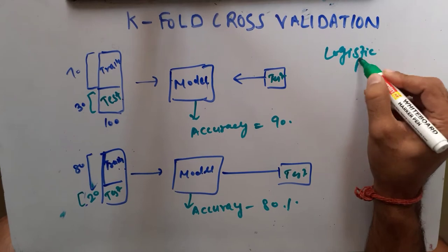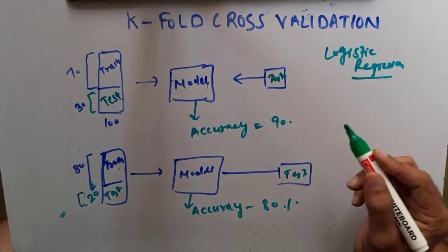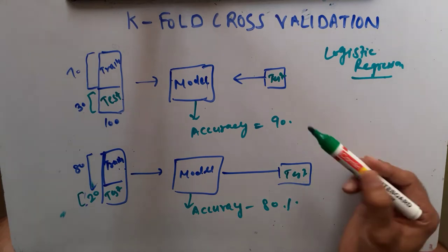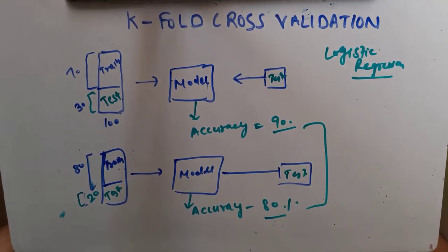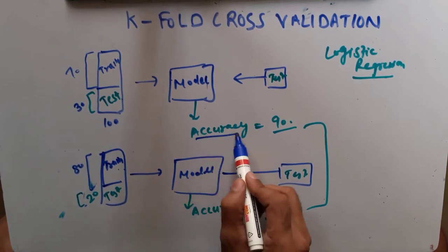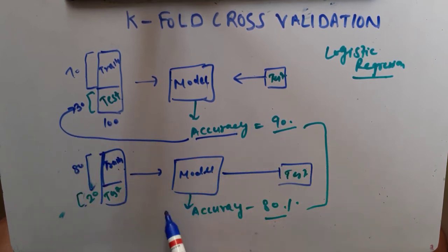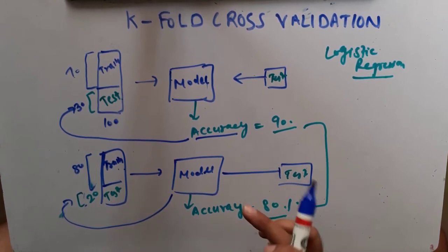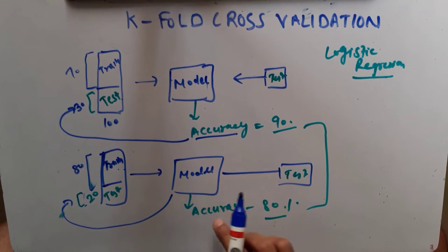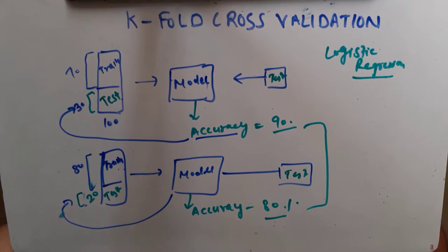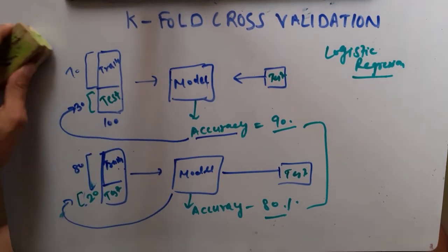Assume we are using logistic regression for the problem. How is it possible that we are using the same model, training on the same data, but still getting different accuracy? This situation arises because our model accuracy is dependent on the size of the test data — here 30% and here 20%. This is not a very ideal scenario.